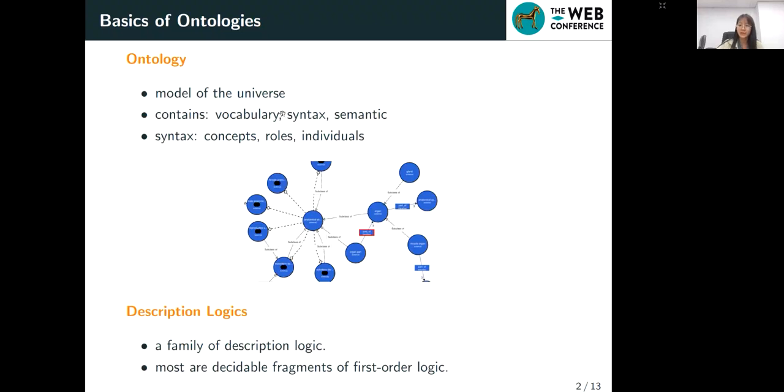Ontology can be seen as a knowledge base which has vocabulary, syntax, and semantic. The syntax primitives include concepts, individuals, and roles. And here's an example of an ontology called Theft. Here in the graph, the circular nodes are individuals and or concepts and the rectangle nodes are roles.